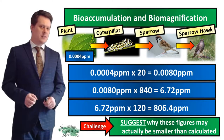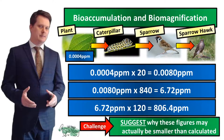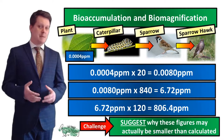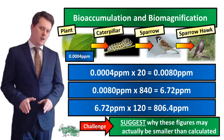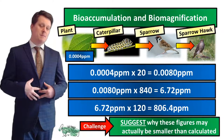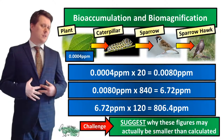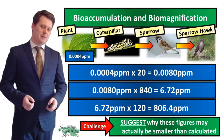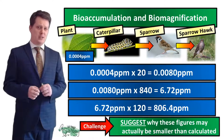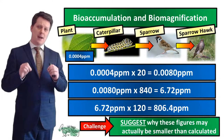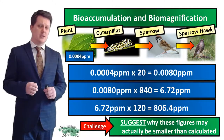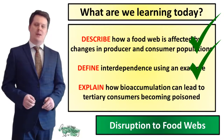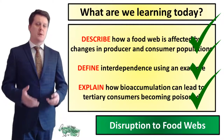There are some reasons why these figures may be smaller than what we've calculated. Not every plant, caterpillar and sparrow is going to be contaminated with the same amount of pesticide — it could be a lot lower. Also, these toxins may not be absorbed by the body when the animal eats them. And when these toxins are absorbed, it's possible that they can be metabolized and then excreted from the body. This is a very high concentration of pesticide, and you can see how bioaccumulation can lead to the poisoning of our tertiary consumers and apex predators. So now we can explain how bioaccumulation can lead to our tertiary consumers becoming poisoned.